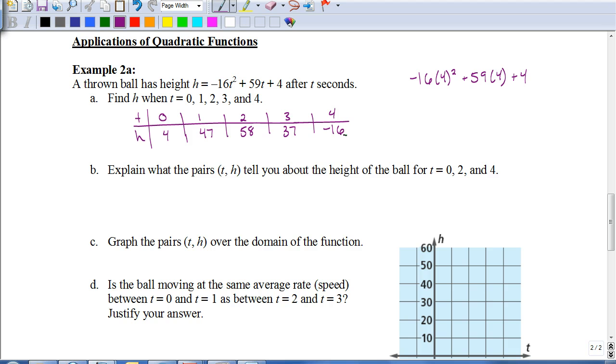So let's answer some questions here. It says explain what the pairs T and H tell you about the height of the ball for 0, 2, and 4. So basically what they're looking for is that after 0 seconds, the height of the ball was 4 feet. So that's what that means. After 0 seconds, the height of the ball was 4 feet. After 2 seconds, the height of the ball was 58 feet. And the key here is that after 4 seconds, the height of the ball is negative 16, meaning the ball hit the ground.